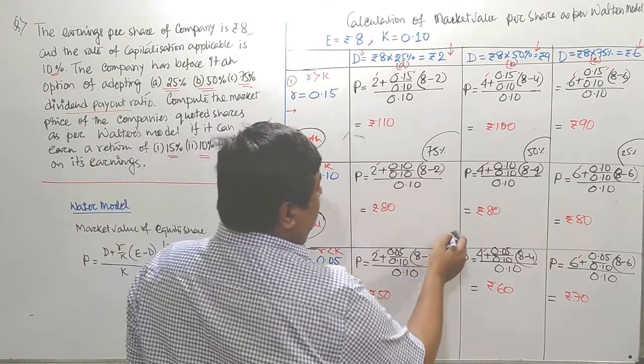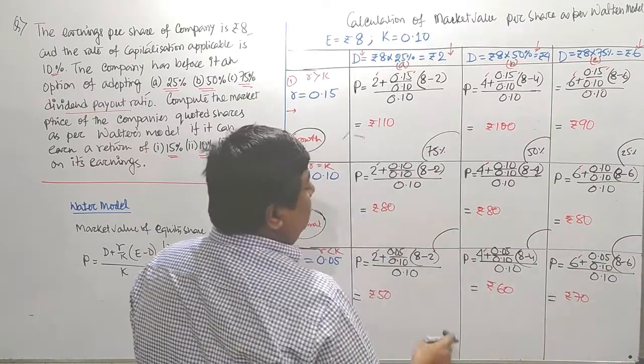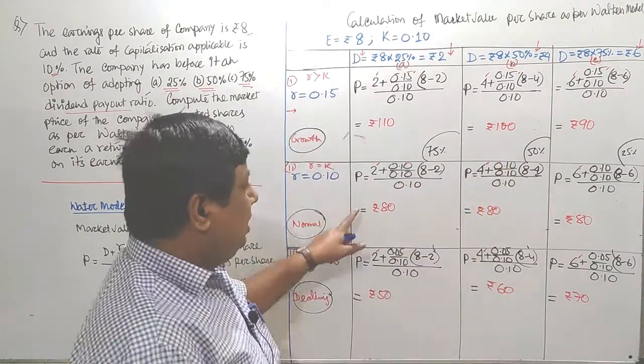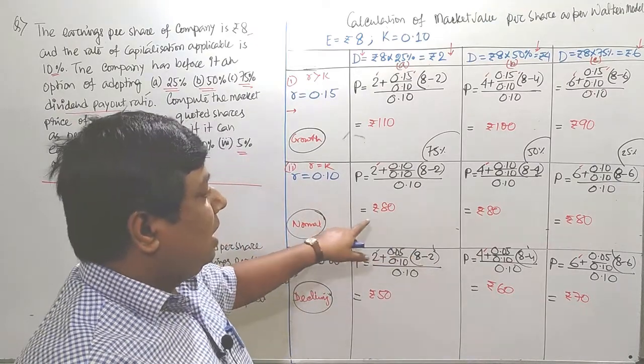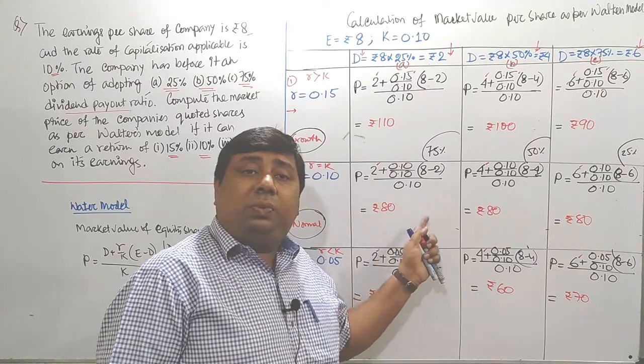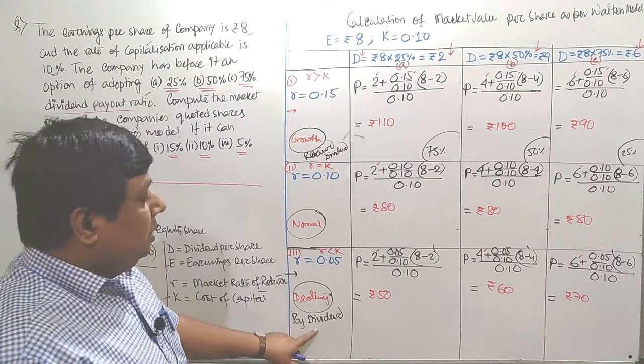In second option, according to the logic of Walter, either the company retained or the company pay, that particular proportion doesn't have any impact on the market value per share. If you look at that second condition, whatever proportion the company pays, either 75 or 50 or 25, it doesn't have any impact. You got the similar market value in each and every box.